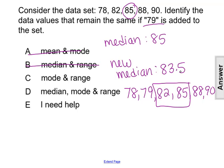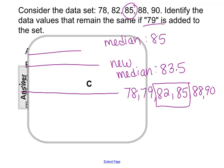It has decreased from the original. It did not stay the same. So we can't have answer choice D because the median did not stay the same. It was only the mode and range. So our answer is going to be choice C.